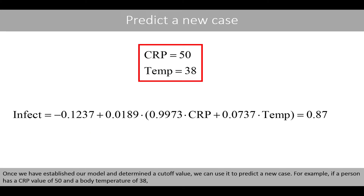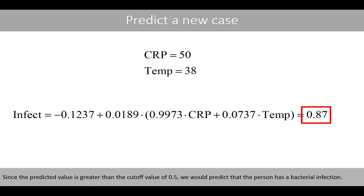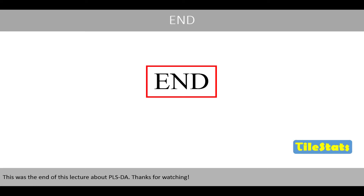Once we have established our model and determined a cut-off value, we can use it to predict a new case. For example, if a person has a CRP value of 50 and a body temperature of 38, we plug in these values in the equation and do the math. Since the predicted value is greater than the cut-off value of 0.5, we would predict that the person has a bacterial infection. This was the end of this lecture about partial least squares discriminant analysis. Thanks for watching.